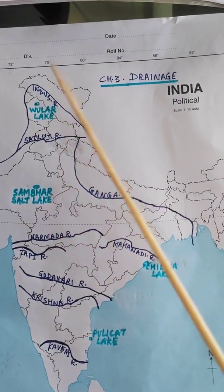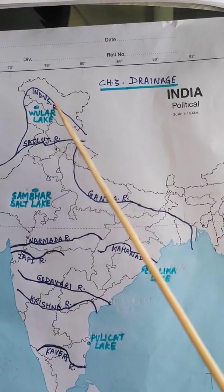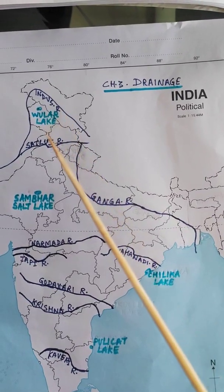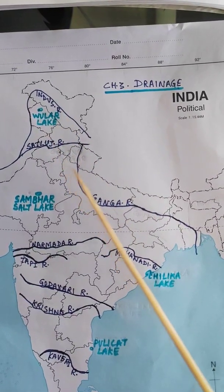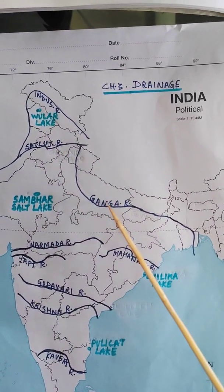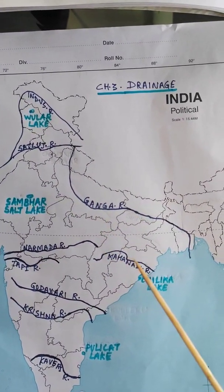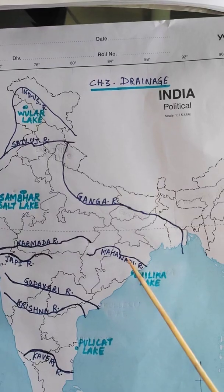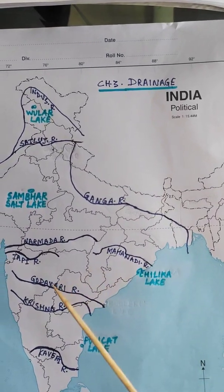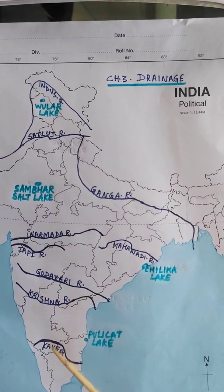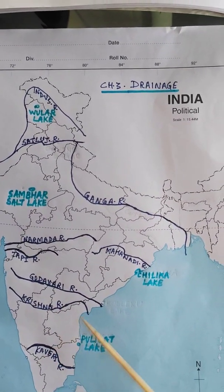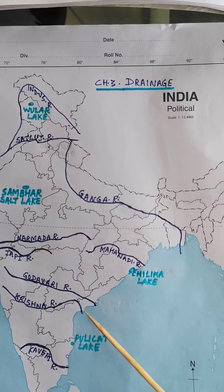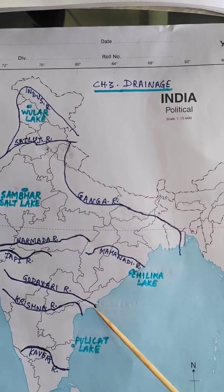The rest are rivers: Indus River, River Satlaj, Ganga, Mahanadi, Godavari, Krishna, and Kaveri. You have to look at the delta areas to identify which delta belongs to which river.